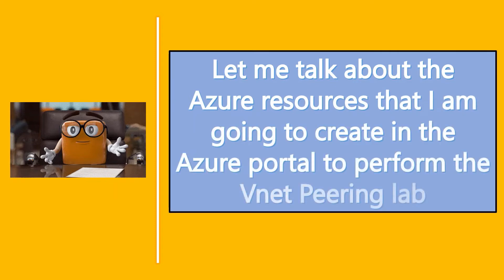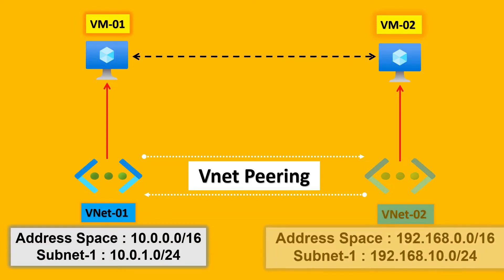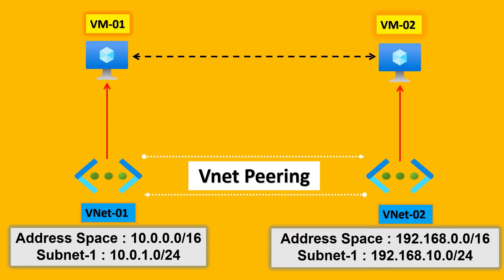Let me talk about the Azure resources I'm going to create for this VNet Peering lab. I'll present a diagram showing the resources to create in the Azure portal. First, I'll create VNet 01 with an address space. Next, VNet 02 with another address space. Then VM 01 in the first VNet, and VM 02 in the second VNet. After that, I'll test the connection between the two VMs, then enable VNet Peering to enable communication from VNet 01 to VNet 02 and vice versa.